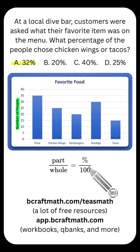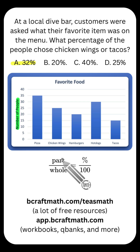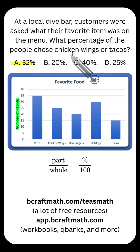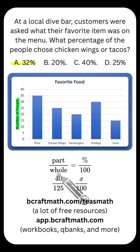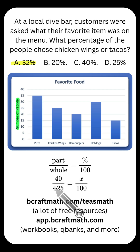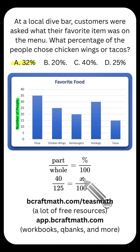Now I did mention I would show you the proportion way. It's basically just a slightly longer version of what I just did. Part over whole equals percent over 100. We're trying to find a percent. The part is going to be the portion — that's the chicken wing lovers and the taco lovers — and that was 40 people out of the whole. The whole means the total number of people, which was 125. We're trying to find the percent, so there's that X.